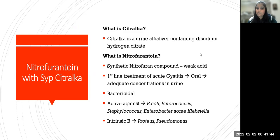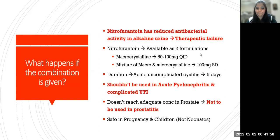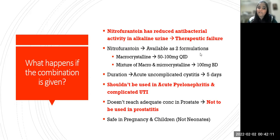If you think about it — nitrofurantoin is an acidic compound and has intrinsic resistance to Proteus because Proteus produces urease enzyme which makes the urine alkaline. Nitrofurantoin has reduced antibacterial activity in alkaline urine, which could lead to therapeutic failure. Hence, this combination with Citralka should not be prescribed — it is as good as giving no antibiotic.